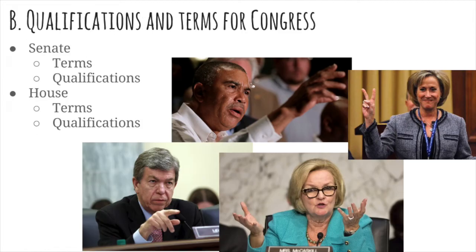The qualifications and terms for Congress are different for each of the two assemblies. In the Senate, the terms are six years long with unlimited re-election. The qualifications are that you have to be 30 years old at the time of taking office, be a resident of the state, and have been a citizen for at least nine years. In the House, the terms are only two years, so they're almost constantly running for re-election. The qualifications are 25 years old, a resident of the state you're representing, and a citizen for at least seven years.